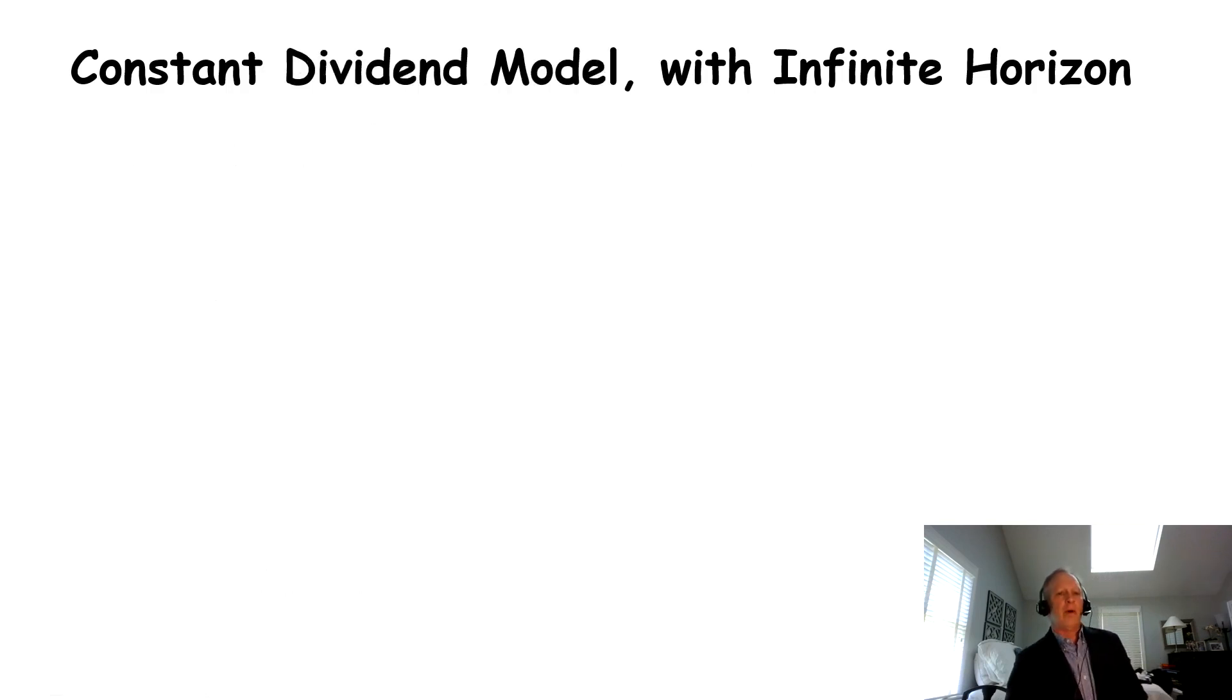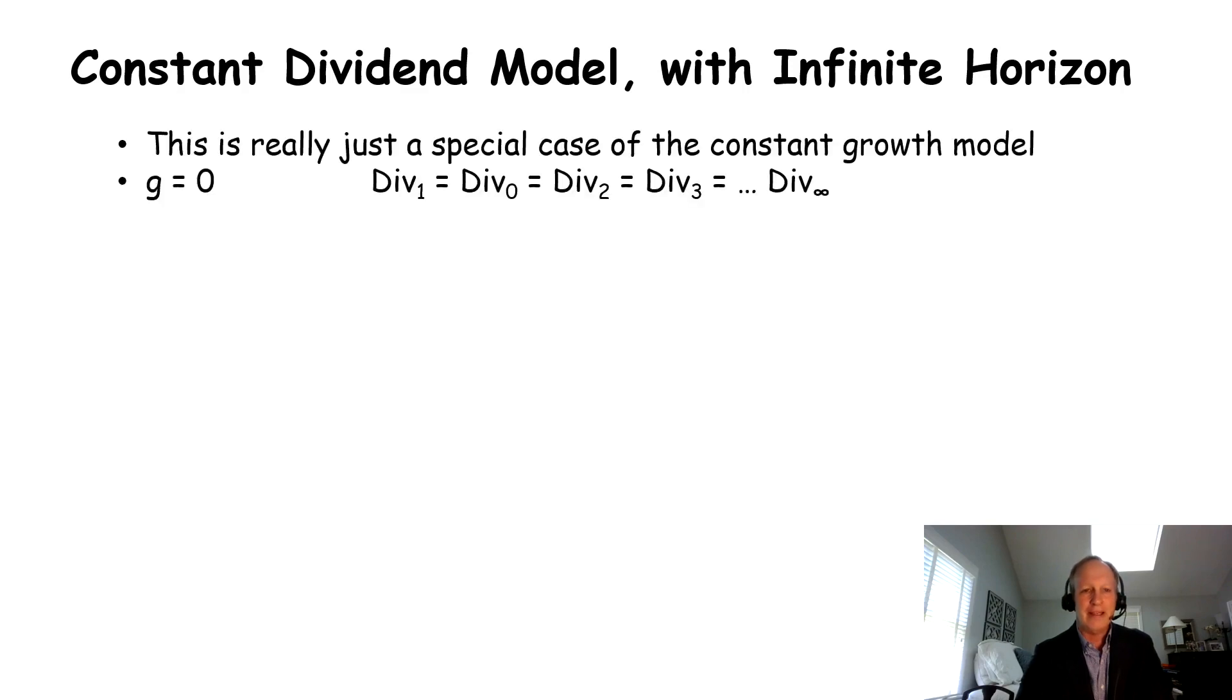Now, let's do a different one. Constant dividend model with an infinite horizon. Now, this is really just a special case of the Gordon growth model. It's a special case where G is actually equal to 0. The dividends aren't going to grow. They're going to stay the same forever. Dividend 1 equals dividend 0 equals dividend 2. It doesn't change. We can actually use this equation here that we just used and just set G as G equal to 0. That's really all we're doing. So it's really the same problem with just growth equals 0.